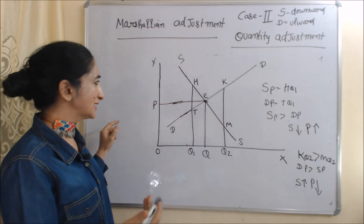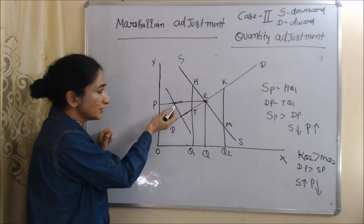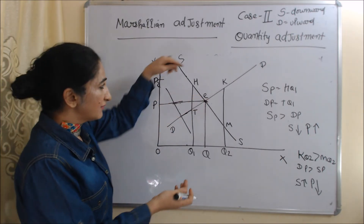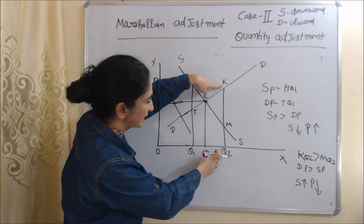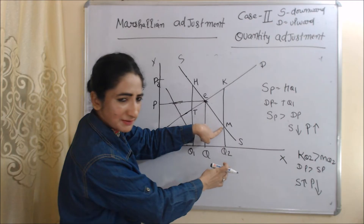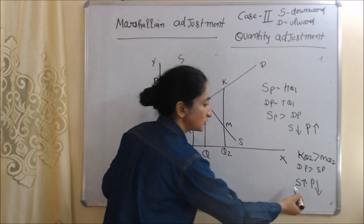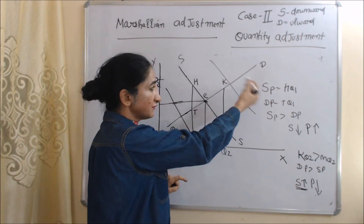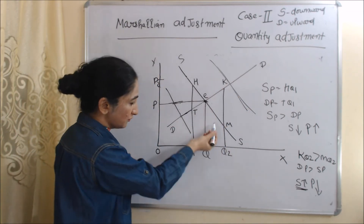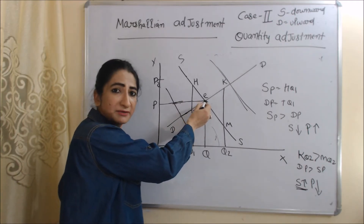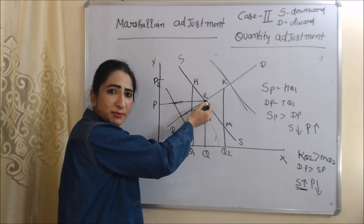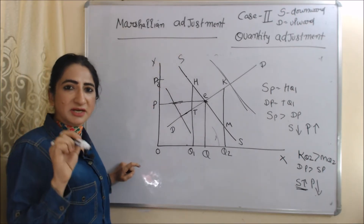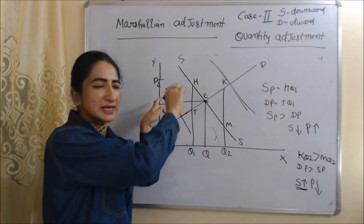If supply price is more than demand price, we reduce supply, causing prices to increase. The supply curve shifts backward and prices go above the equilibrium, but we do not return to equilibrium point E. Similarly, if demand price is more than supply price — KQ2 is demand price and MQ2 is supply price — we increase supply, prices fall, and we go below equilibrium but again not back to E. Since we cannot achieve the initial equilibrium point, this is called an unstable equilibrium.